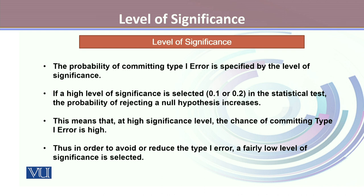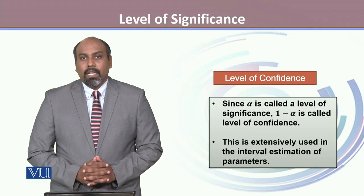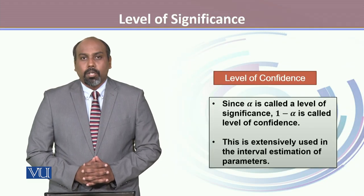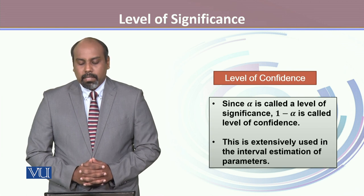Thus, in order to avoid or reduce the type 1 error, a fairly low level of significance is selected. Since alpha is called the level of significance, 1 minus alpha is called the level of confidence.